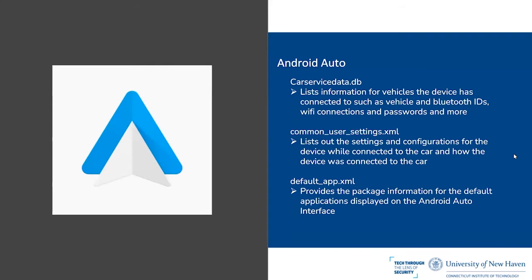For Android Auto, the car service database — carservicedata.db — lists information for the vehicles and devices that were connected. Any vehicle that the phone was connected to is recorded there, and it contains vehicle and Bluetooth IDs, as well as information about Wi-Fi connections and passwords for the vehicles.